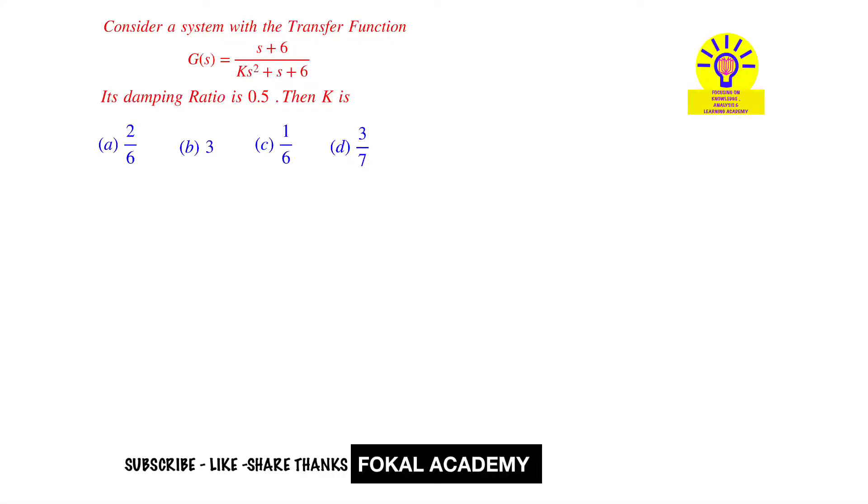Hi to everyone. Seen this problem here, a control system problem is given. For a system the transfer function is given as G(s) = (s + 6)/(k*s^2 + s + 6). For this transfer function, the damping ratio is given as 0.5. So then what is the k value here? How can you find it?